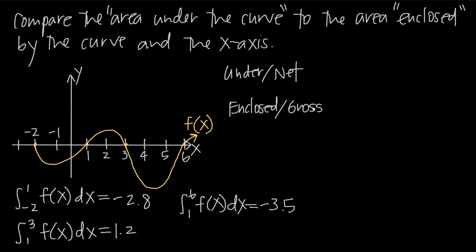With gross area, we treat area above and below the x-axis as positive — in other words, we're taking the absolute value of all of the area. So for area under the curve or net area, we're doing positive and negative area. For area enclosed by the curve or gross area, we're doing all positive area.